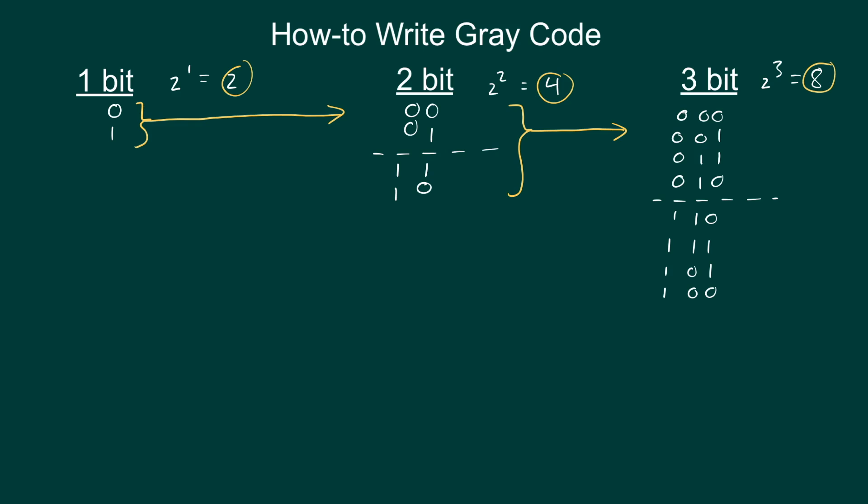And it's important that you add the zeros and the ones in front of the numbers that you previously wrote because this keeps them in order. You could write them at the end and it would technically be right. But the Gray codes would not be in order. They wouldn't be one bit apart.